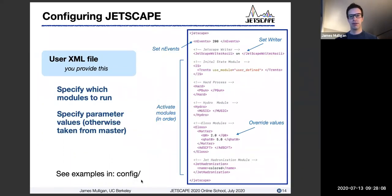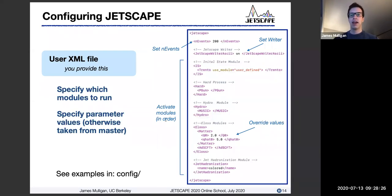The user XML file, on the other hand, is much simpler. The example shown on the right is actually the full file — everything that you as a user would supply — relatively simple, some tens of lines of code. Here you specify some basic information at the top, for example the number of events and what type of output format you want, which we'll discuss later. Then you simply list the modules that you want to include, in the order that you want them to execute.